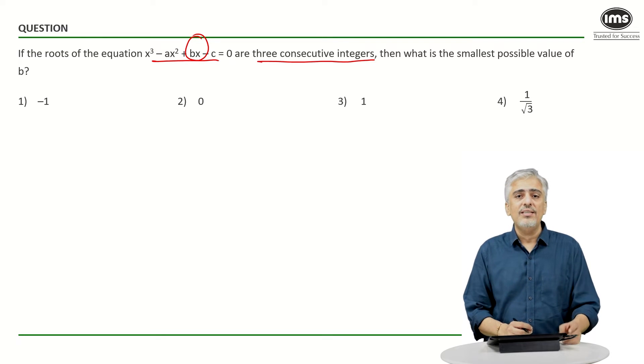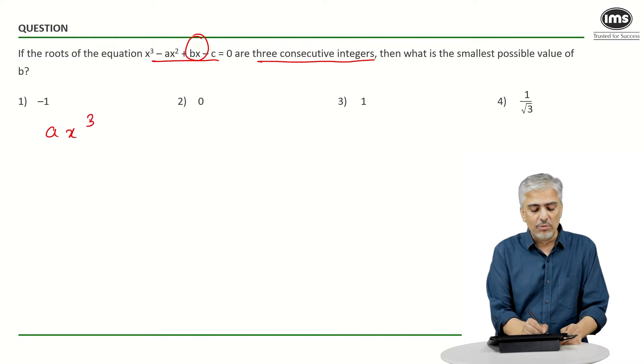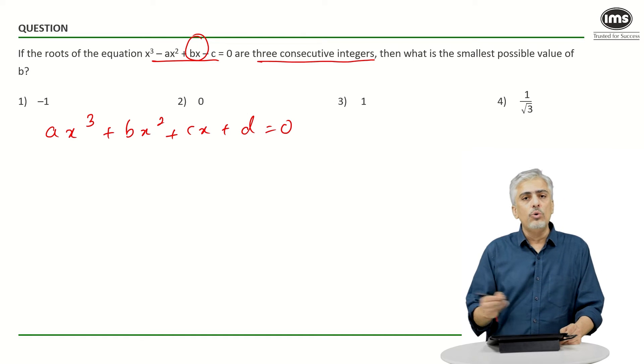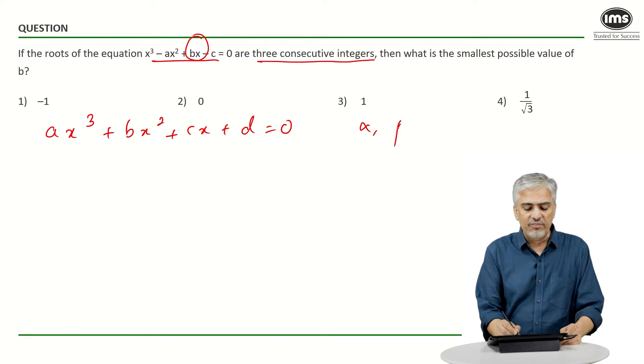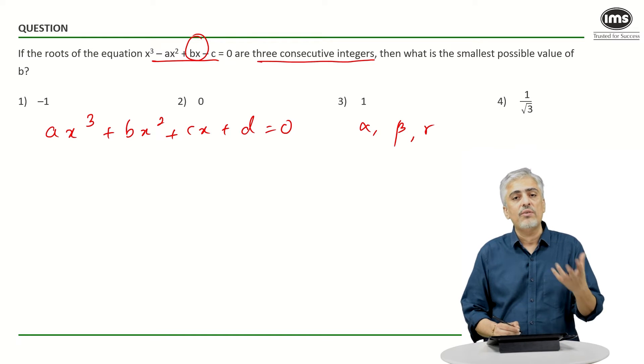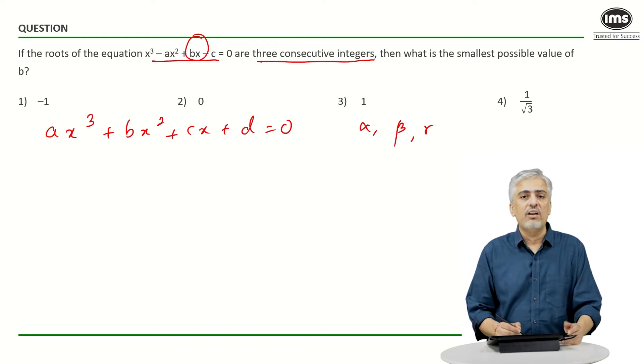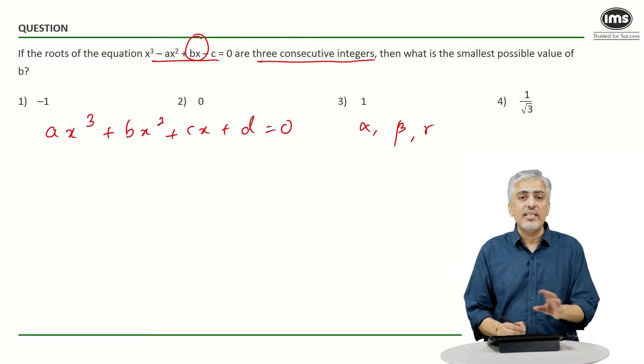Before I do this question, let me just do a concept with you all. If I have a cubic equation in the form ax³ + bx² + cx + d = 0 whose roots are three - three roots are α, β, and γ. Now it's a cubic equation so it has to have three roots. Let's assume the roots are α, β, γ. Then what are the properties we have?